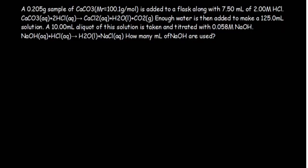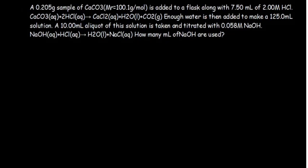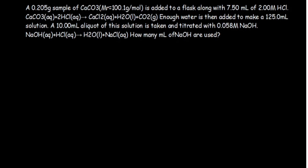In this tutorial we are going to answer a question from stoichiometry. It reads: a 0.205 gram sample of calcium carbonate of molar mass 100.1 grams per mole is added to a flask along with 7.50 milliliters of 2 molar concentration of hydrochloric acid. The reaction given is calcium carbonate reacting with hydrochloric acid to give calcium chloride, water, and carbon dioxide gas.